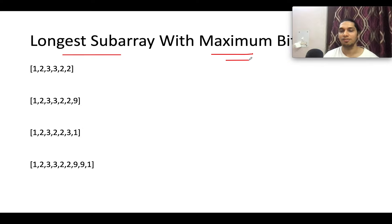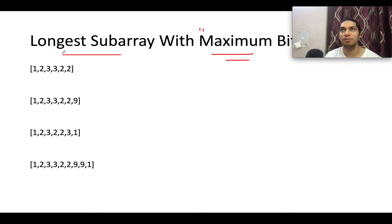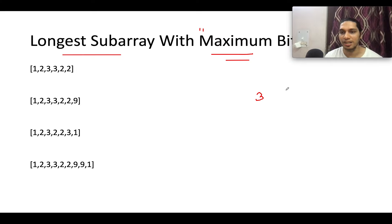The first aspect is you need to identify the maximum bitwise AND, and then identify that particular longest subarray. Where will you find the maximum bitwise AND between any two numbers? That would be the case where the numbers are equal to each other. For example, the bitwise AND of 3 and 9 will obviously be lower than the bitwise AND of 9 and 9.